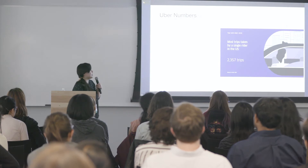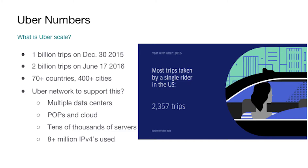Let's first go through some Uber numbers. What scale is Uber operating at? We reached over one billion trips in December 2015, and soon after that — less than half a year — we reached over two billion trips in June 2016. We're now operating in over 70 countries and more than 400 cities. We have multiple data centers, a couple of network POPs, and a number of cloud presences. We're operating over tens of thousands of servers, and from an IP resource perspective, we've used over 8 million IPv4 addresses.